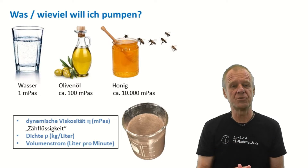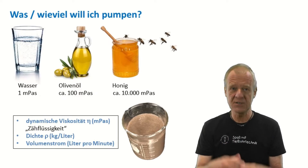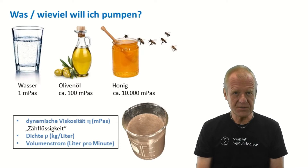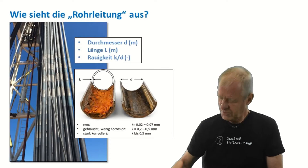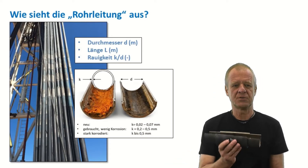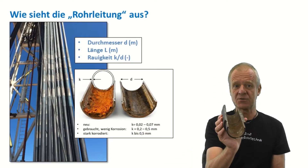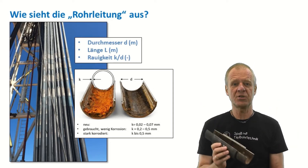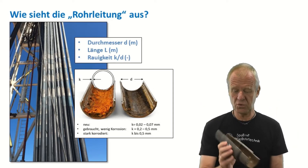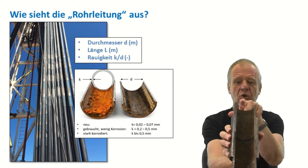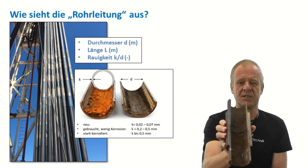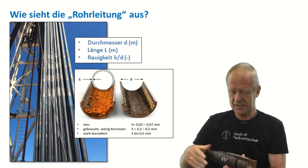Which flow rate is required to ensure that the borehole is properly cleaned during the drilling operation? When all these questions have been answered, we need to look at the drill string to be used — the diameter of the drill pipes, the length of the drill string, how deep the borehole is, as well as the pipe roughness and condition of the inner surface. Is it rough and rusty, or smooth and clean?